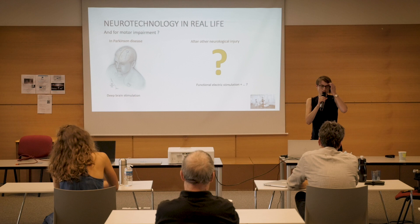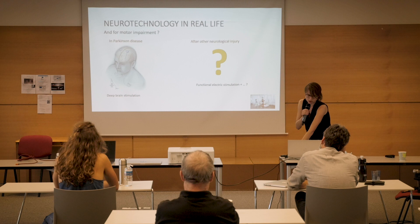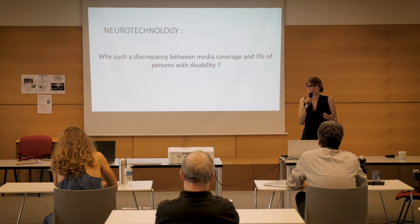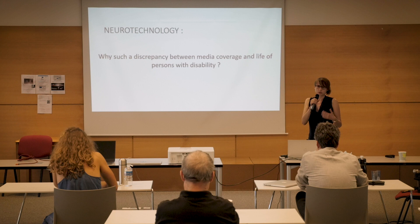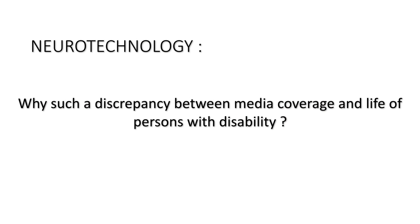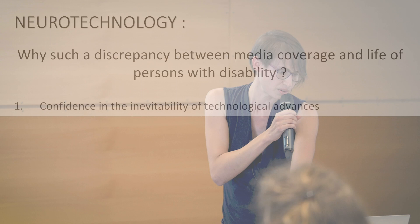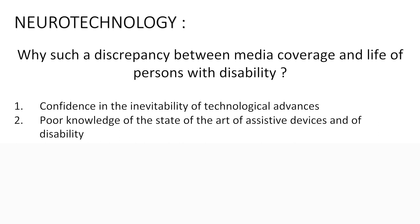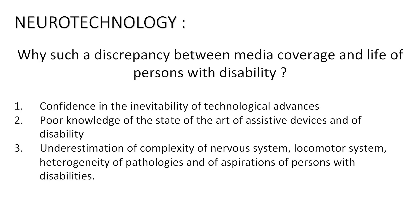It's difficult to understand why there is such discrepancy between media coverage and the life of a person with a disability. When you discuss with journalists, they say everything improves and it should be straightforward. I will try to develop why this discrepancy exists, using three axes: first, there is overconfidence in the inevitability of technological advances; second, there is poor knowledge of the state of the art of assistive devices and of disability; and more generally, people underestimate the complexity of the nervous system and the lack of fundamental neuroscience that we still need.